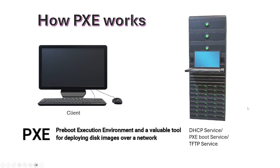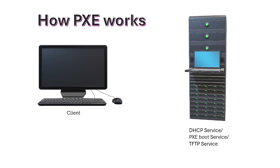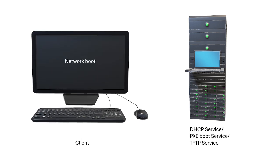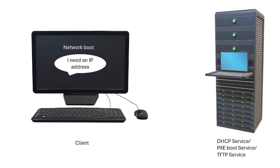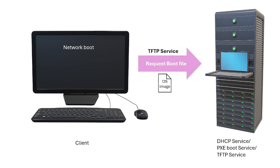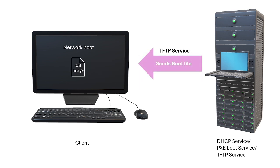PXE stands for Preboot Execution Environment, and it's a tool for deploying disk images over a network. Here's how it works: the client machine boots from the network and sends a DHCP request for an IP address. The DHCP server responds with an IP and the location of the PXE boot server. The client then connects to the TFTP server, requests the boot file, which is loaded into the client's memory — and then we can start the imaging or OS installation process.